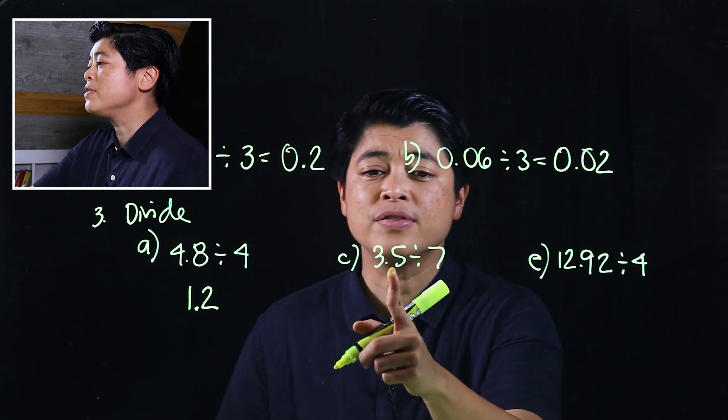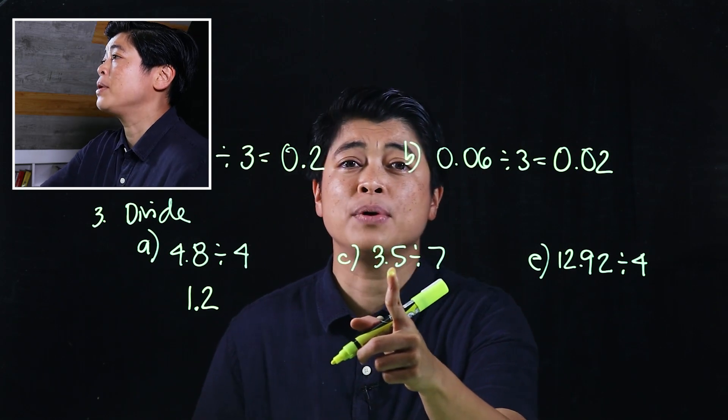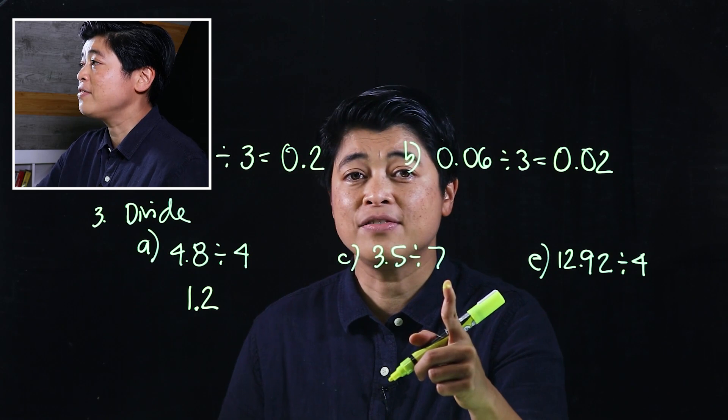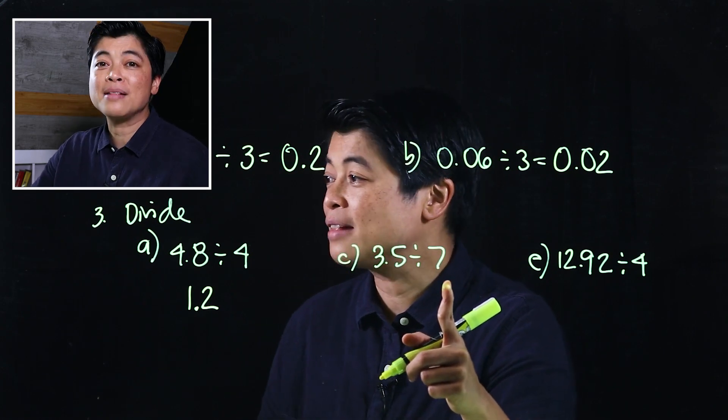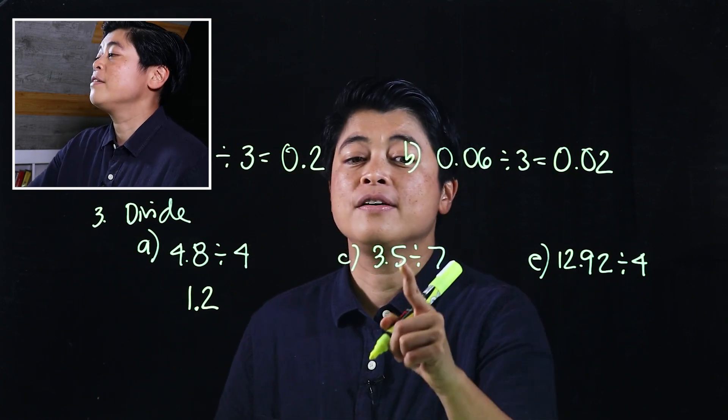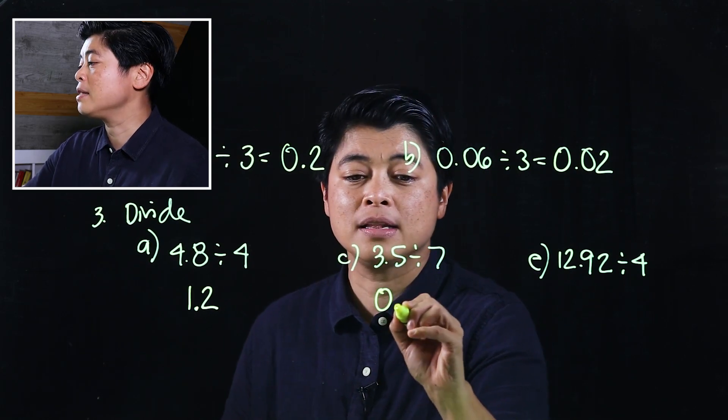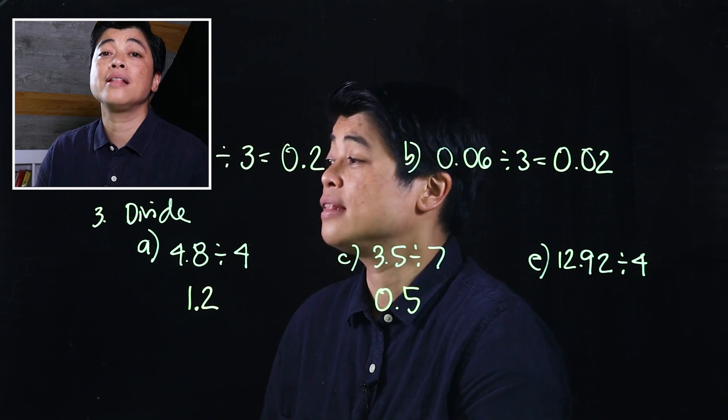Similarly, if I remove the decimal out of the 3.5, that would be 35 divided by 7, which means I can do that mentally. That would be 5, and since there's one decimal place, that would make it 0.5.